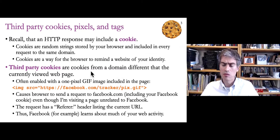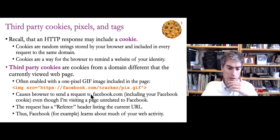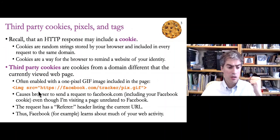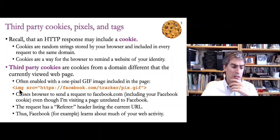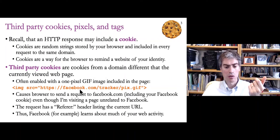Recently, third-party cookies have also been used to track users all around the web in ways users probably aren't happy about. Third-party cookies are called third-party because they're related to a domain different from the page you're currently viewing. A common example is Facebook — in order to sell customized advertisements, Facebook encourages affiliates with a Facebook like or share button to include a tiny one-pixel GIF image served from Facebook. This is a very common way of doing tracking.